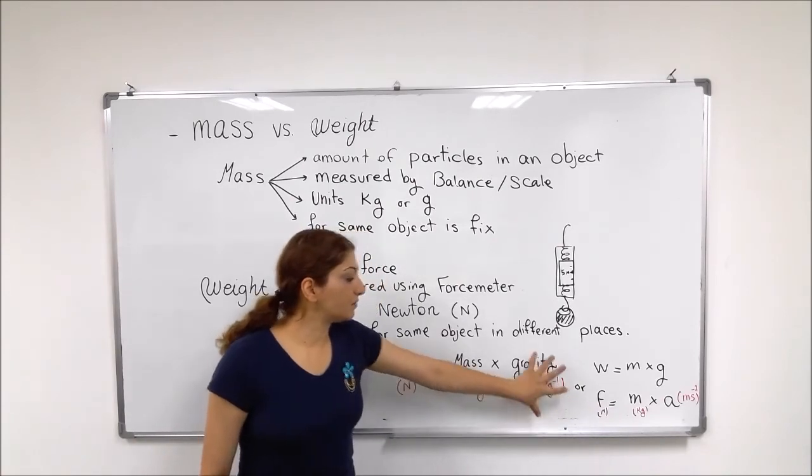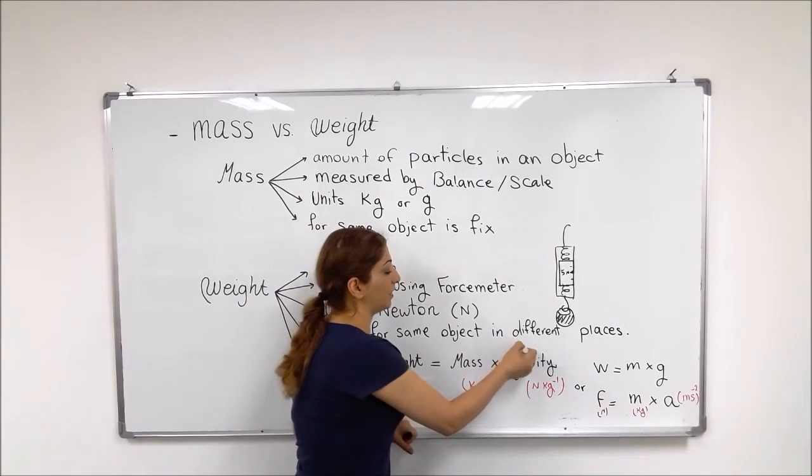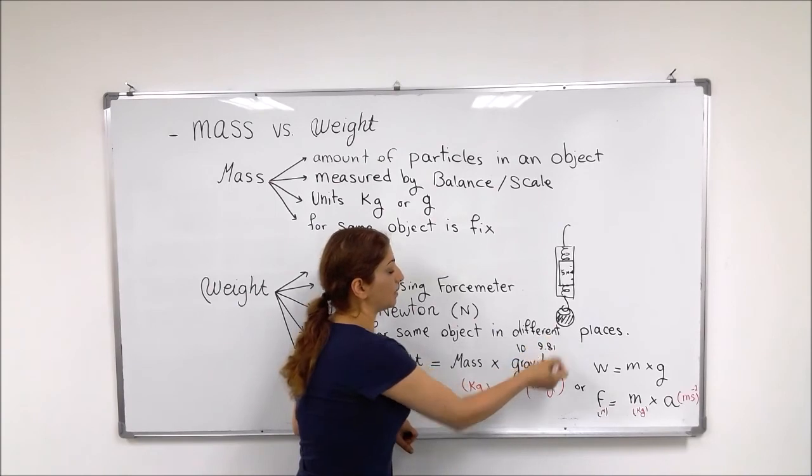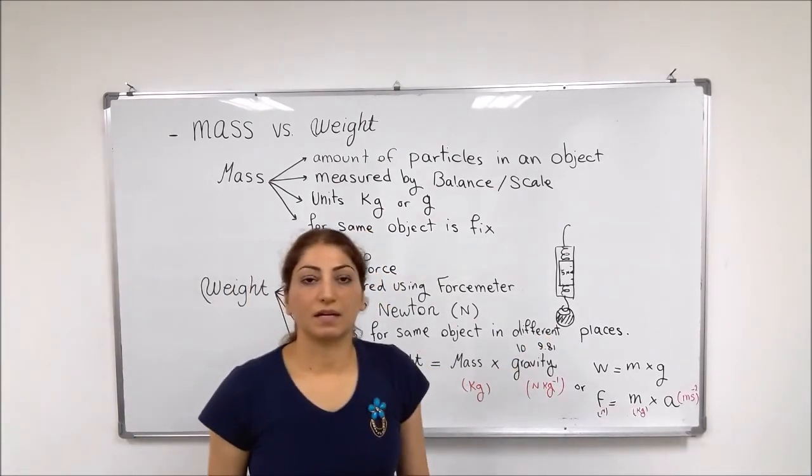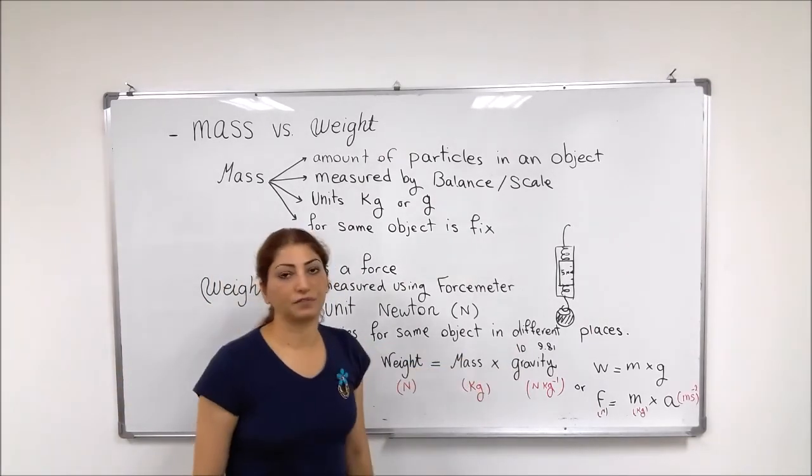So then for the earth, it is considered as 10 or somehow equal to 9.81 Newton per kg. It is the gravitational field of the earth.